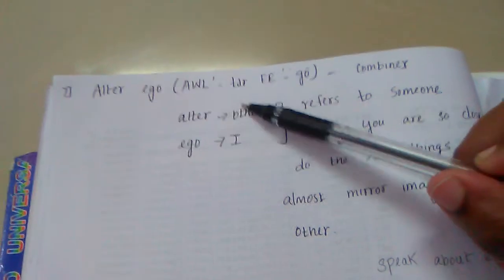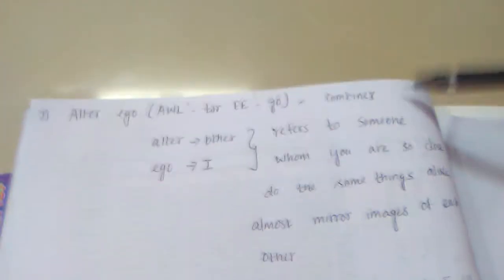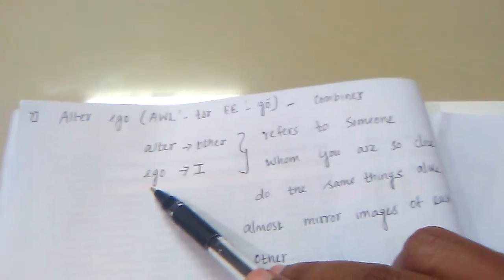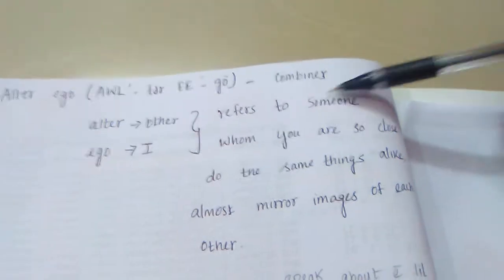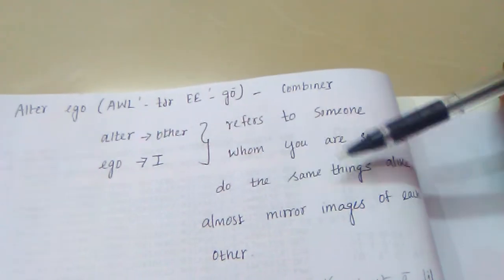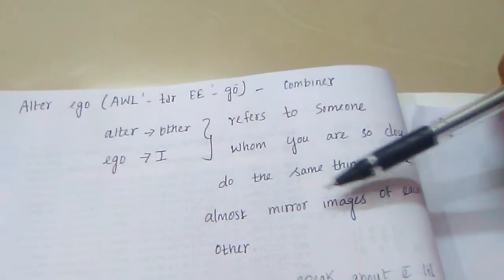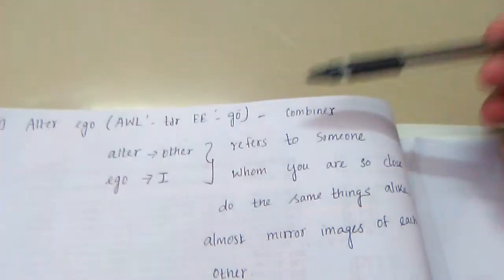Alter ego, A-L-T-E-R-E-G-O, is a combination of two words: alter and ego. So what is the meaning? Alter is other, ego is I. So combined, it refers to someone whom you are so close to, who does the same things alike, almost mirror images of each other. So that word is called an alter ego.